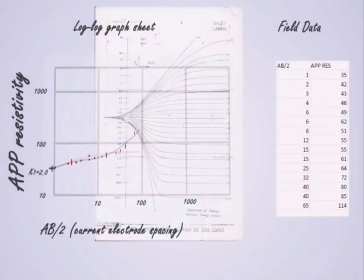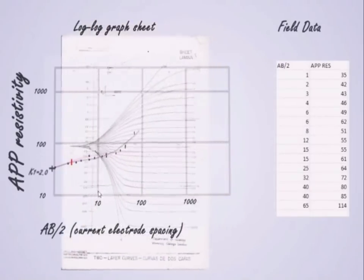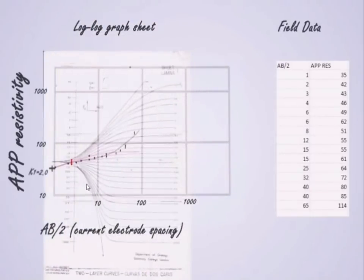Now we would continue matching the other part of our curve. That's why it's called partial curve matching. I will place it on my master curve again. Check out the part of the theoretical curve that matches with my field point. I have gotten this. I will mark it. And then check out the value of that curve, and this is a 1.5. I will cross the origin, and then pull my K2 equals 1.5.